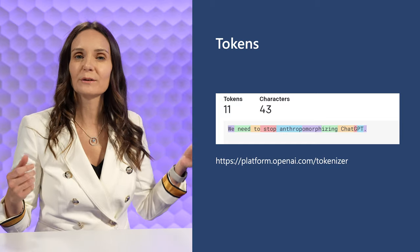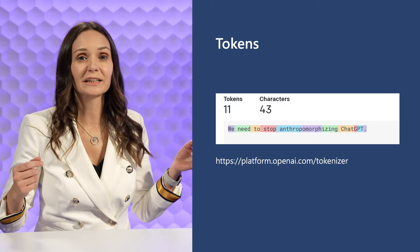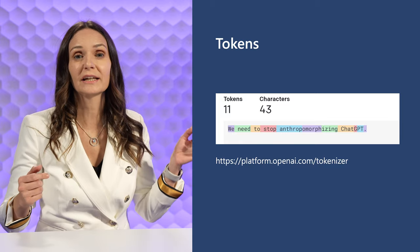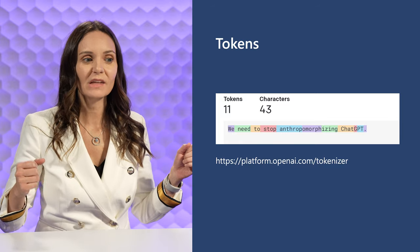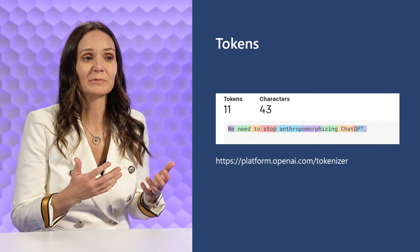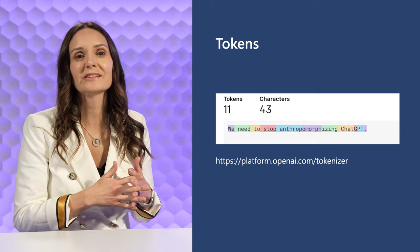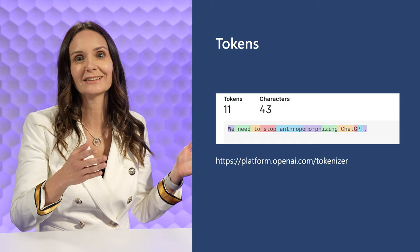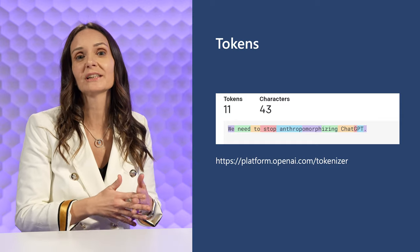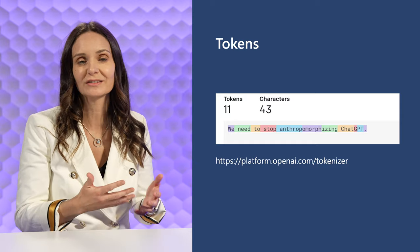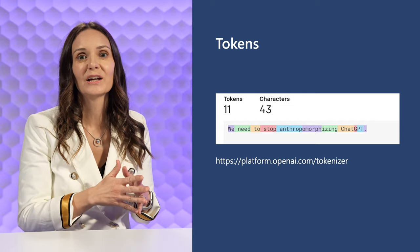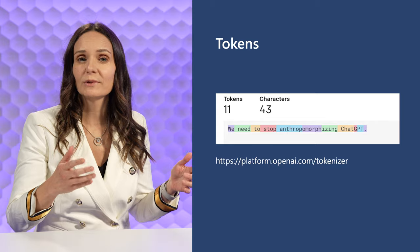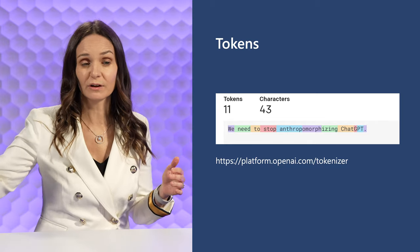On one end of the spectrum, you could tokenize text by letter — that would be the simplest way, where each letter is a token. This would certainly be simple to implement, except you'd have a lot of tokens for a very short sentence. Language models generally have a limit on how many tokens they can take in, so it's not a great idea to use more tokens than you need.